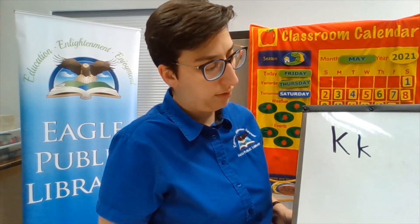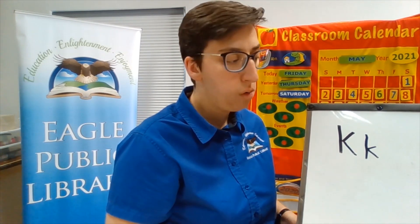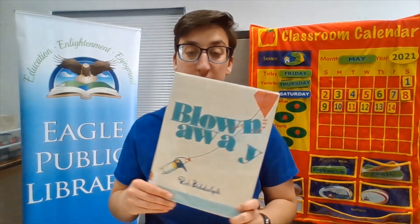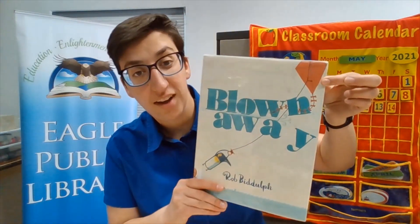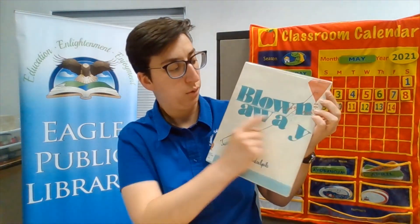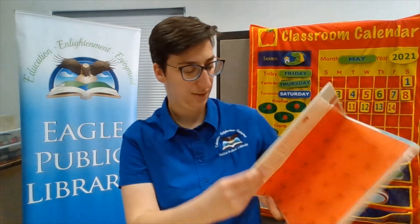Maybe some of your names start with K — maybe Cassandra with a K, or Kevin with a K, or Kelsey with a K. Are there any Kevins or Kelseys or Cassandras out there? Let us know. Our letter for today is K, and the thing in our book that starts with K is... a kite! Kite starts with K. And so, in this story called Blown Away, we're going to see what happens to this penguin and his kite. Let's read this story.